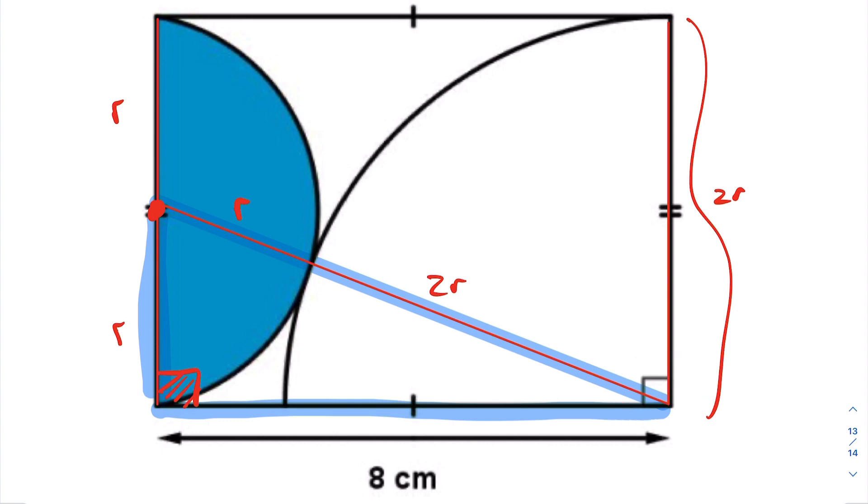So we can go ahead and set up Pythagorean theorem, giving us the following. We're going to have R squared plus 8 squared is going to equal 3 quantity squared, in which case I get R squared plus 64 is 9R squared, in which case I get 64 is 8R squared. Therefore, R squared is 8, and my radius is the square root of 8.